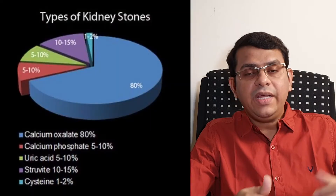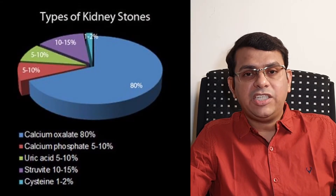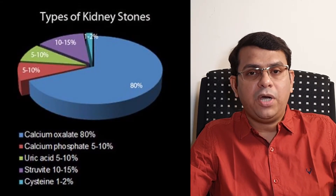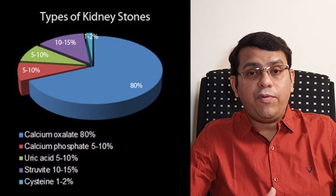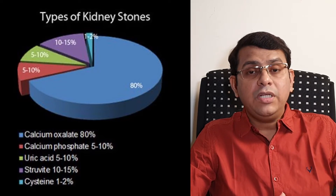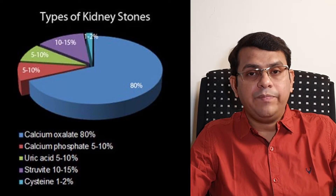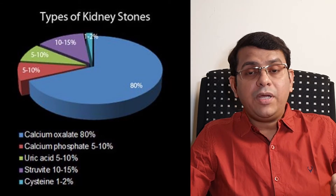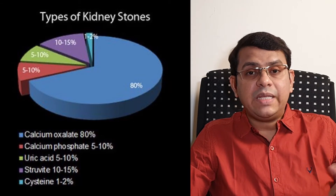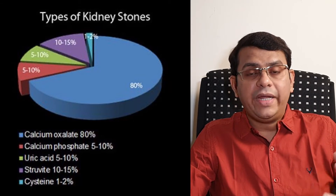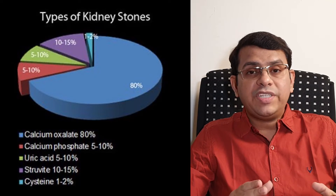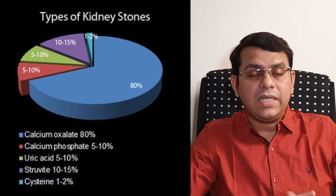Stones can be of different types based on the material that crystallizes to form them. Stones can be calcium crystals — either calcium oxalate or calcium phosphate. They can be formed from struvite because of infection, or they can be because of cystine or uric acid.